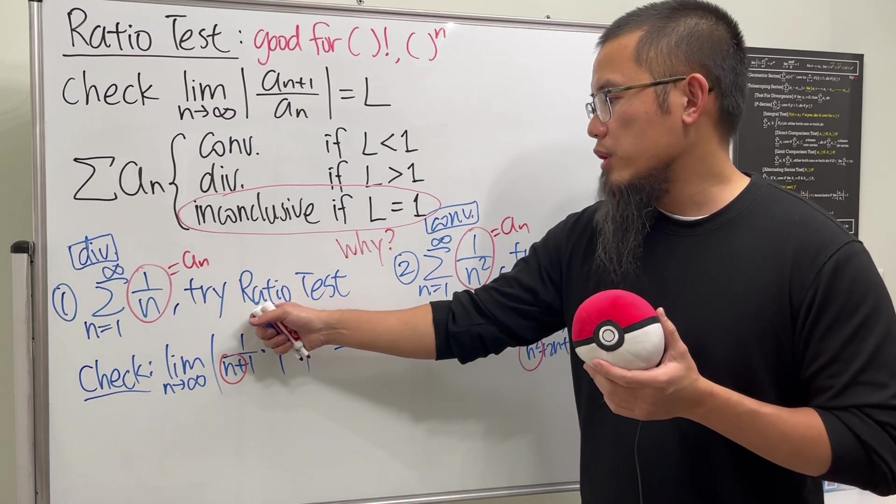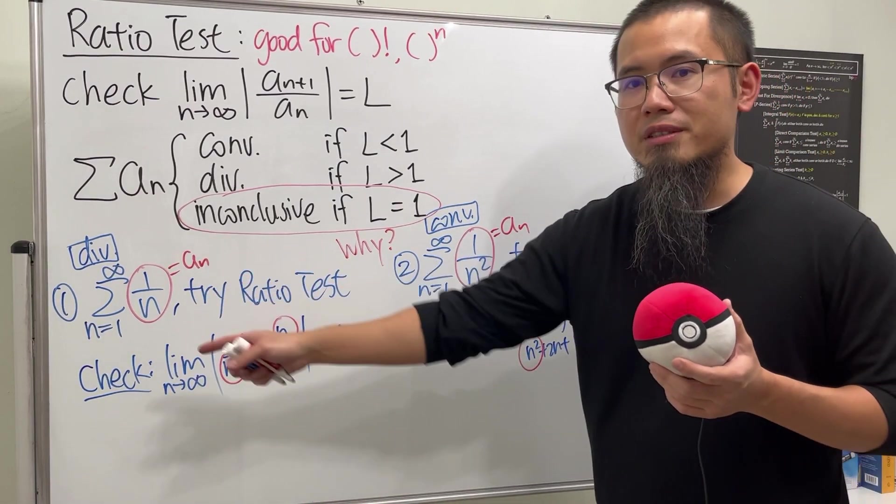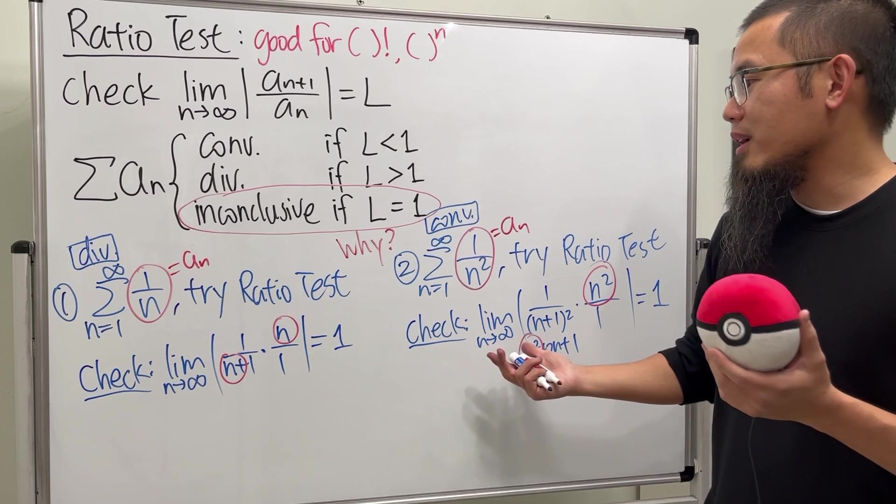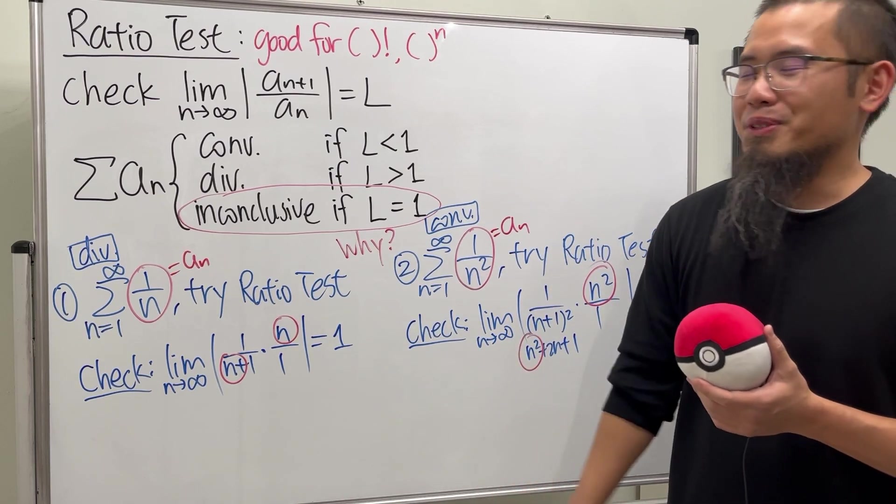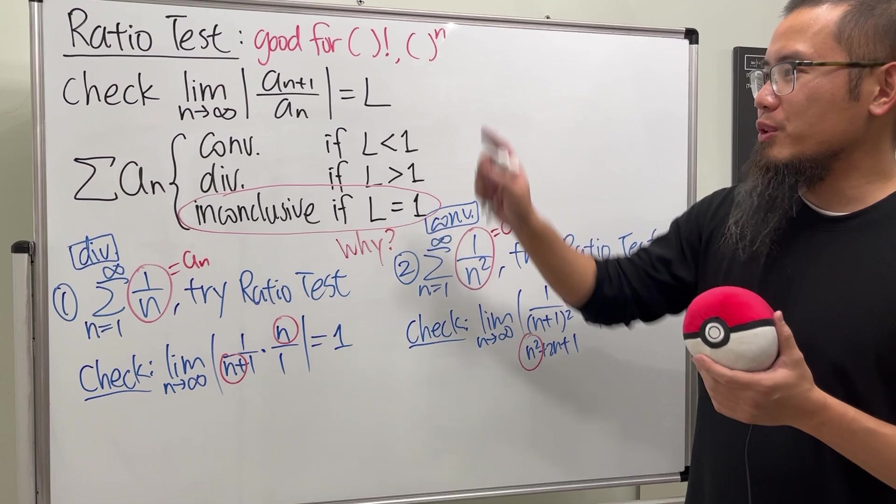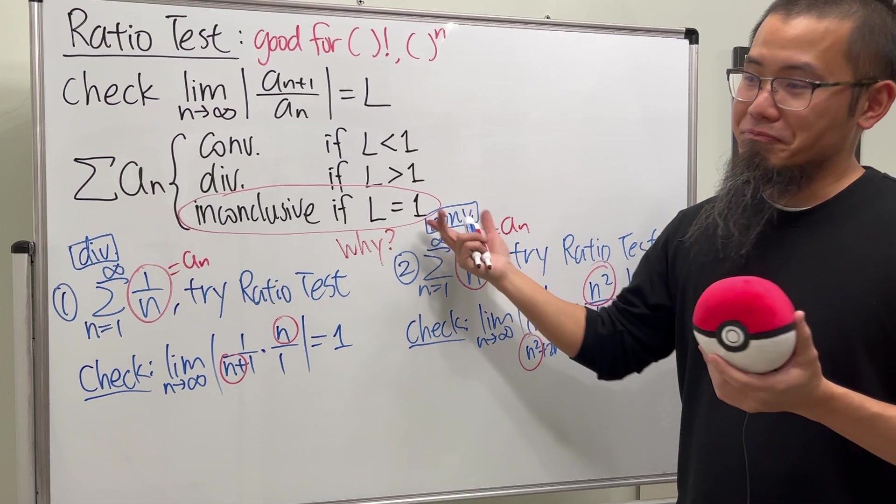Of course, don't do the ratio test for the p-series. Don't do that. I don't know why, but it's just for demonstration purpose, to show that ratio test has its limitation. That's all.